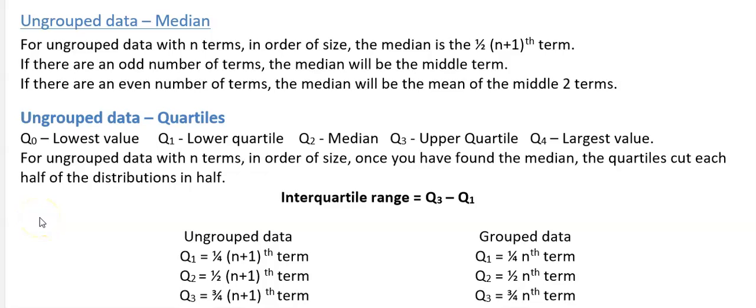We're going to look at quartiles. Quartiles mean the lower quartile, the median, and the upper quartile. The lower quartile is a value which is one quarter way through the distribution, the upper quartile is a value which is three quarters way through the distribution, and the median is the middle value — halfway through the distribution.